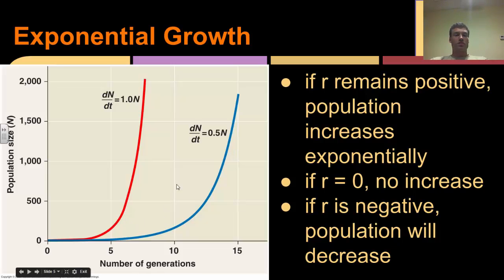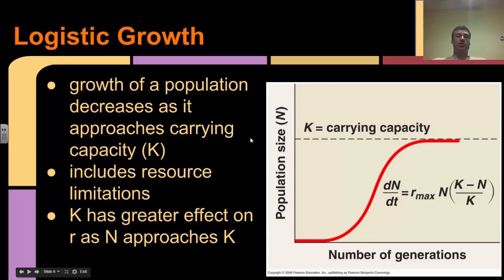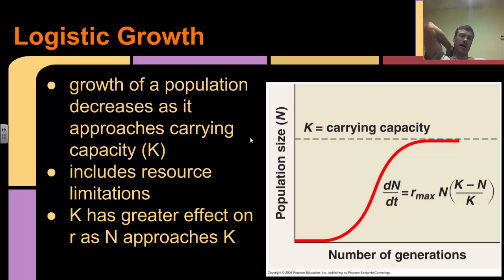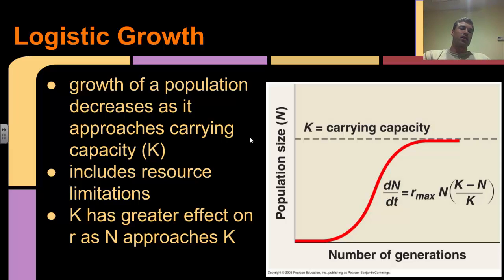The rate - how large our R value is - will determine how quickly our population is going to be growing. The classic shape of an exponential growth curve is the J-shaped curve. The other type of growth is logistic growth. What happens is that as the population approaches its carrying capacity, population growth is going to be decreasing. Carrying capacity is the maximum number of individuals that a population can hold based on the resources in the surrounding area. This is more likely to be what occurs in the real world, because in the real world there are limited resources.